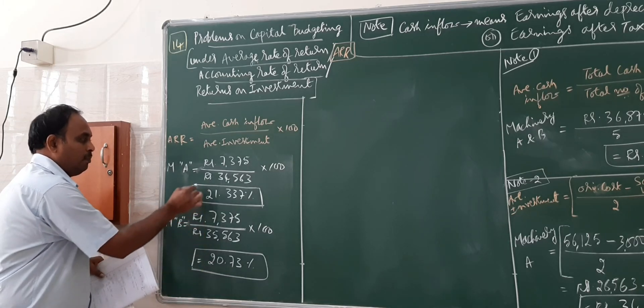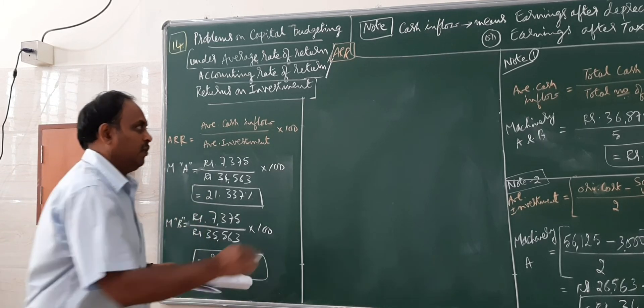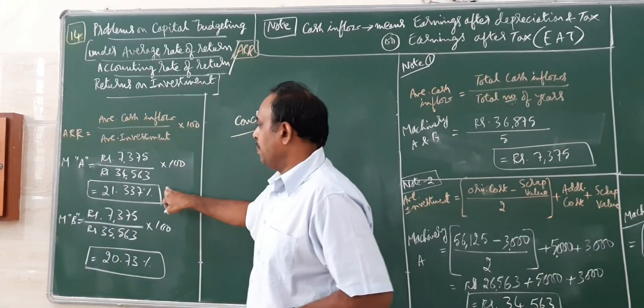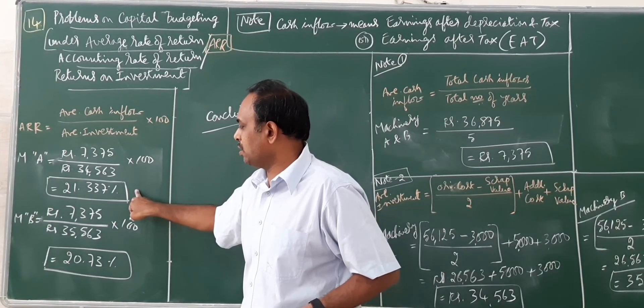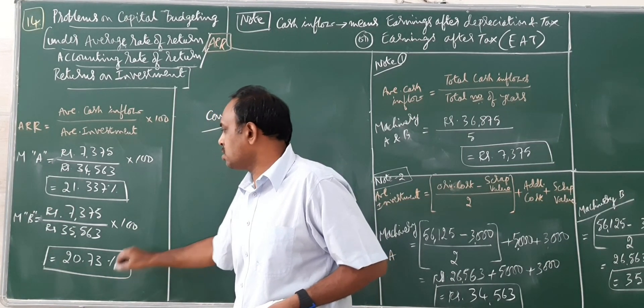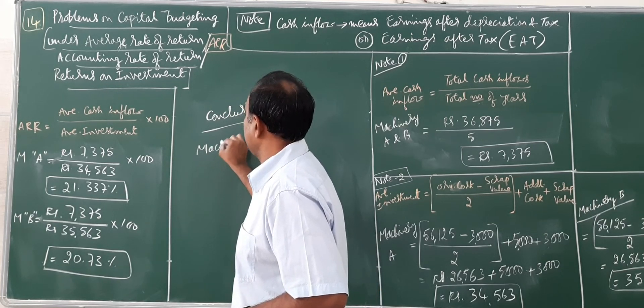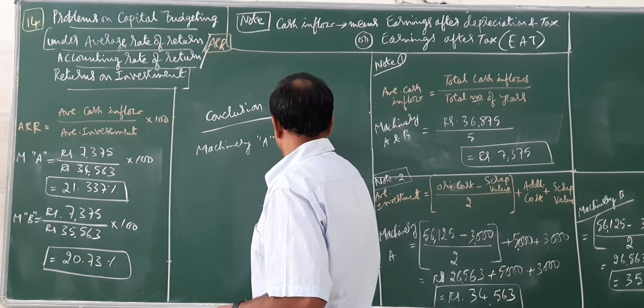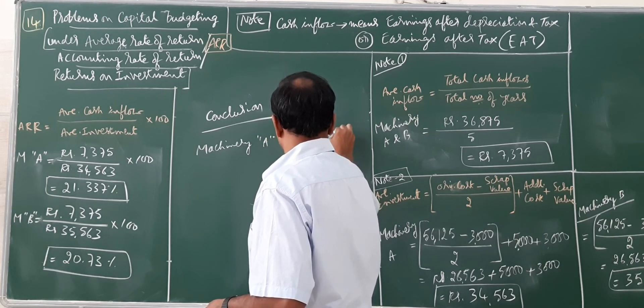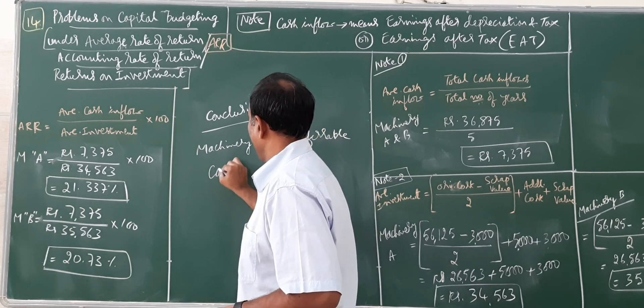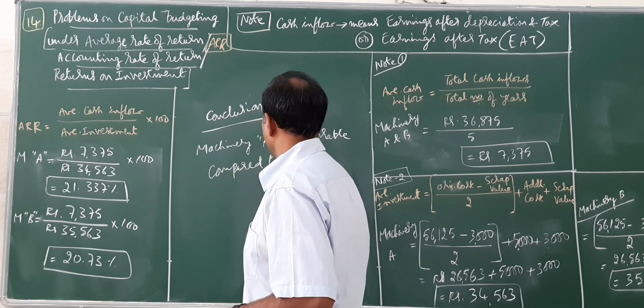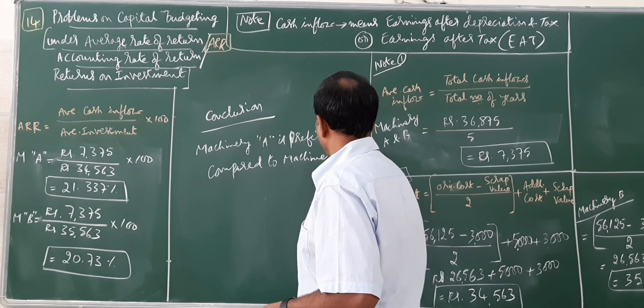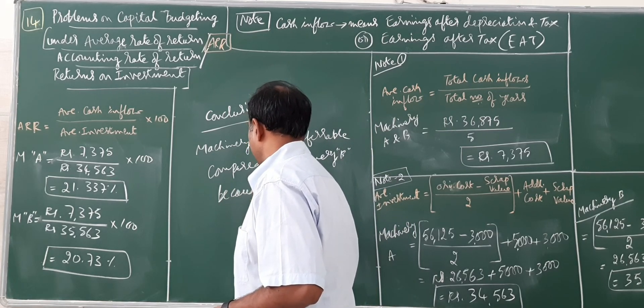So we have to compare here only between A and B. Whichever is higher, that is preferred. So I can conclude, percentage of machinery A is 21%, which is more than B. So machinery A is preferable compared to machinery B because of higher ARR.